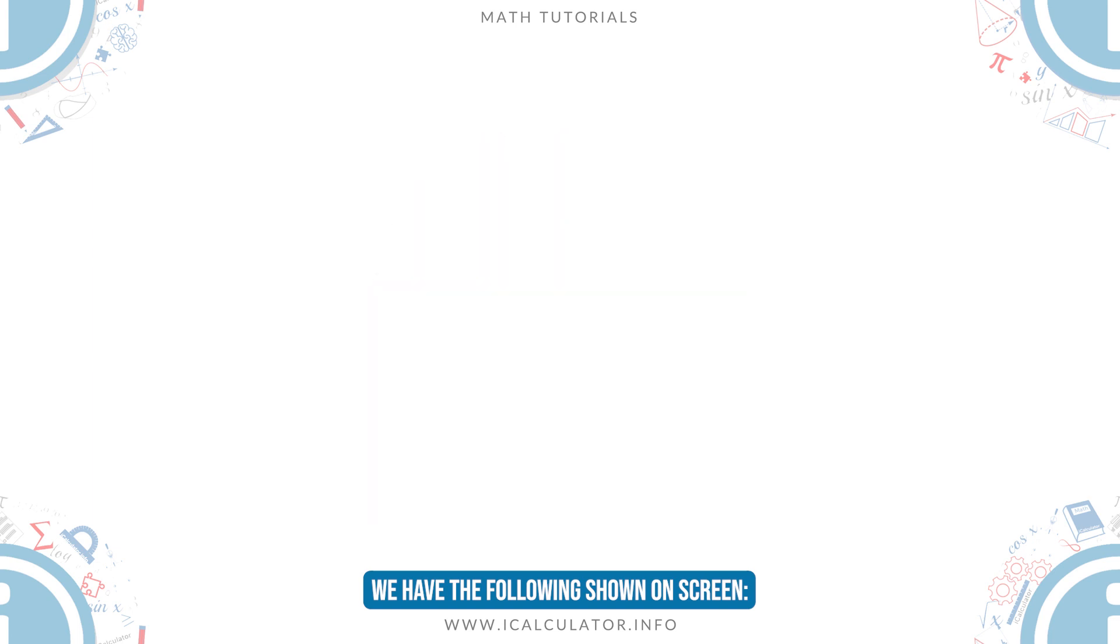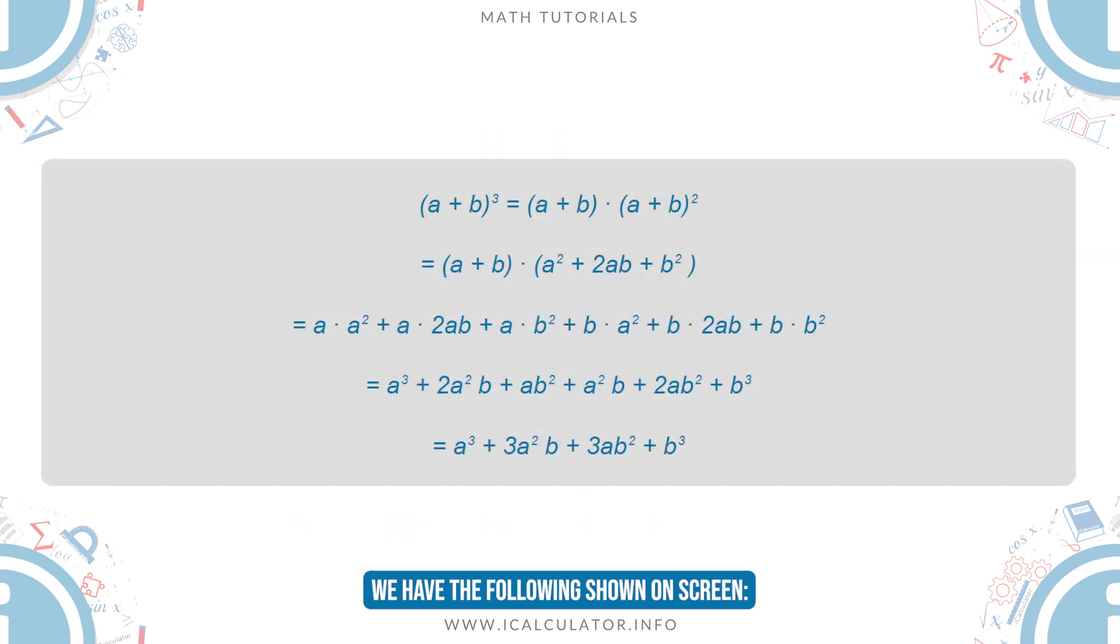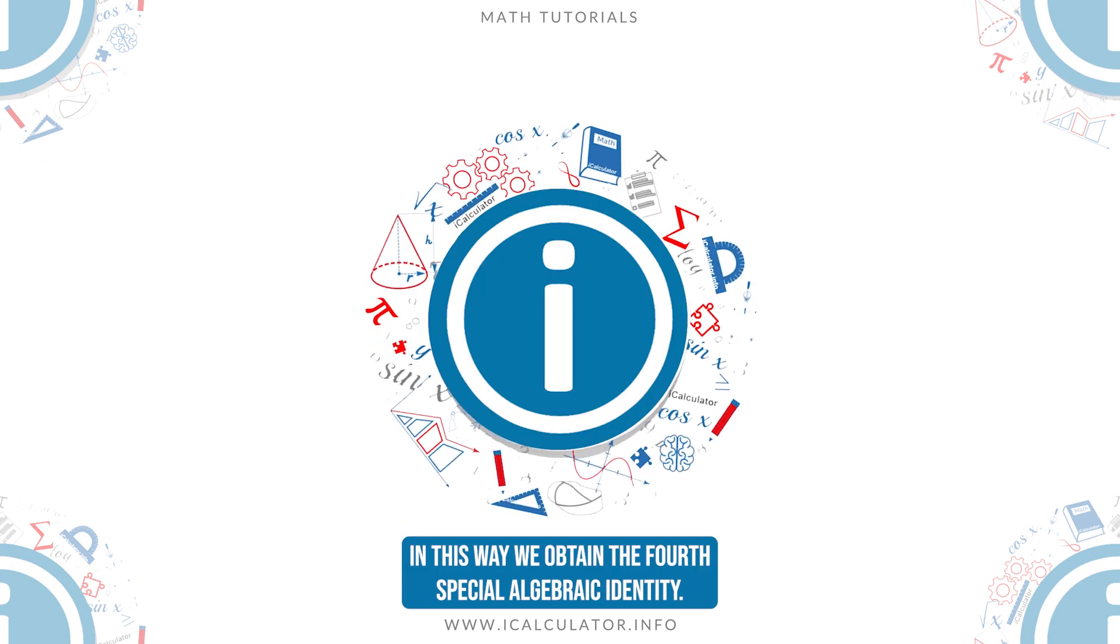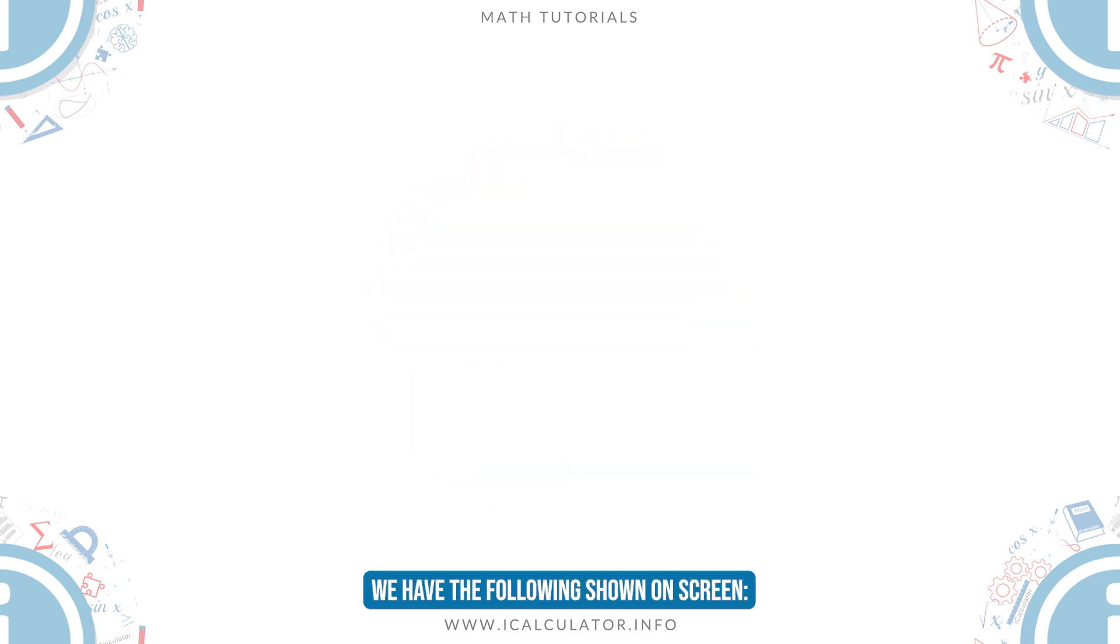We have the following shown on screen. In this way, we obtained the fourth special algebraic identity, we have the following shown on screen.